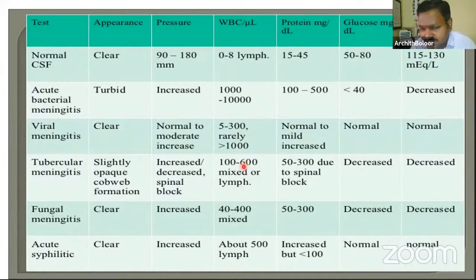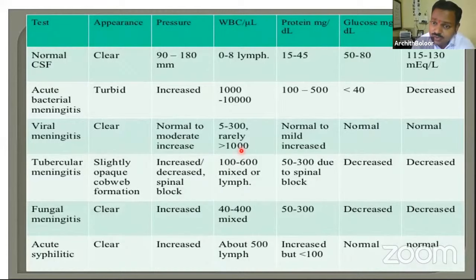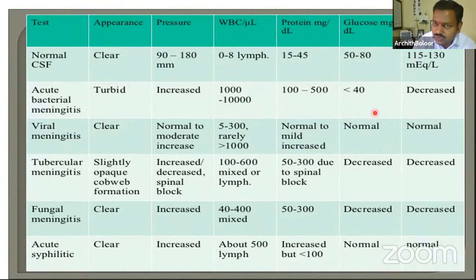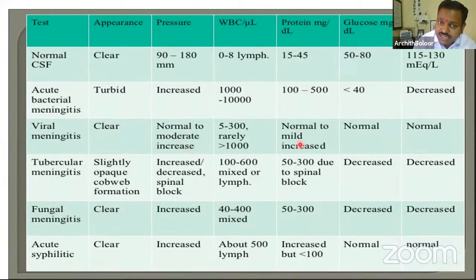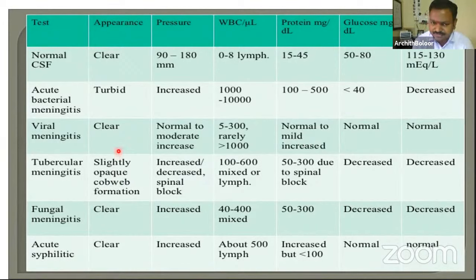The key difference between viral and tuberculous meningitis — both show lymphocytes — is the glucose. Glucose is normal in viral meningitis but decreased in tuberculous meningitis. In TB meningitis, pressure is also very elevated and cobweb formation is present. Fungal meningitis mimics tuberculous meningitis. Syphilitic meningitis, which was common earlier, can also show features of chronic meningitis.